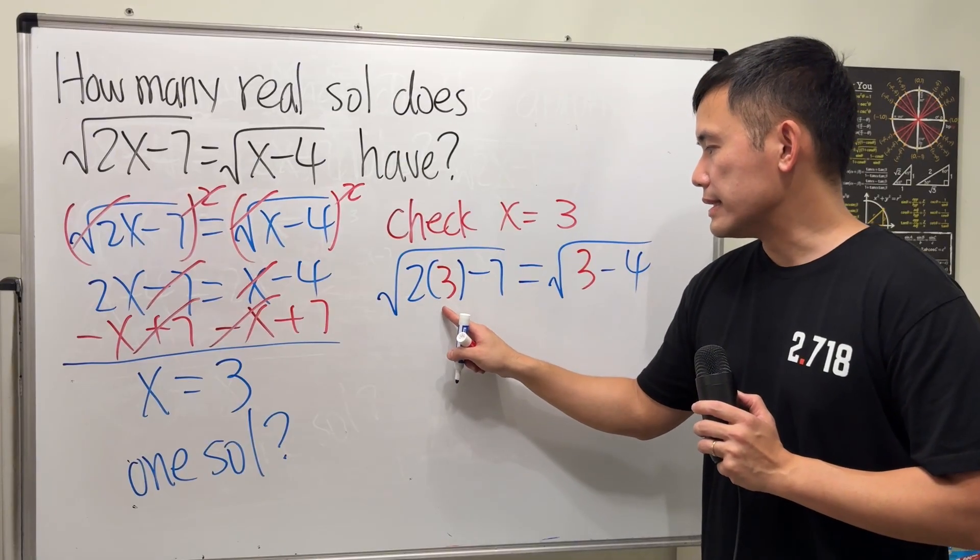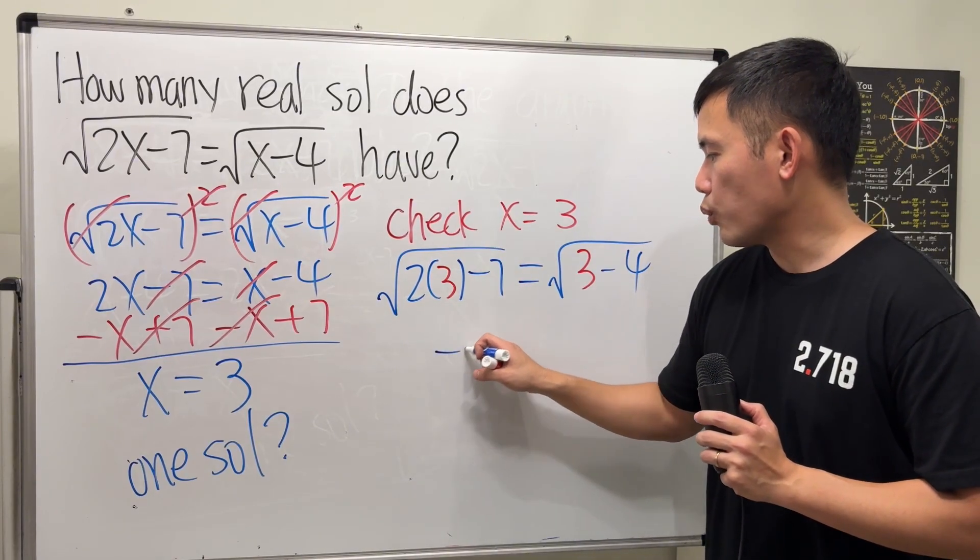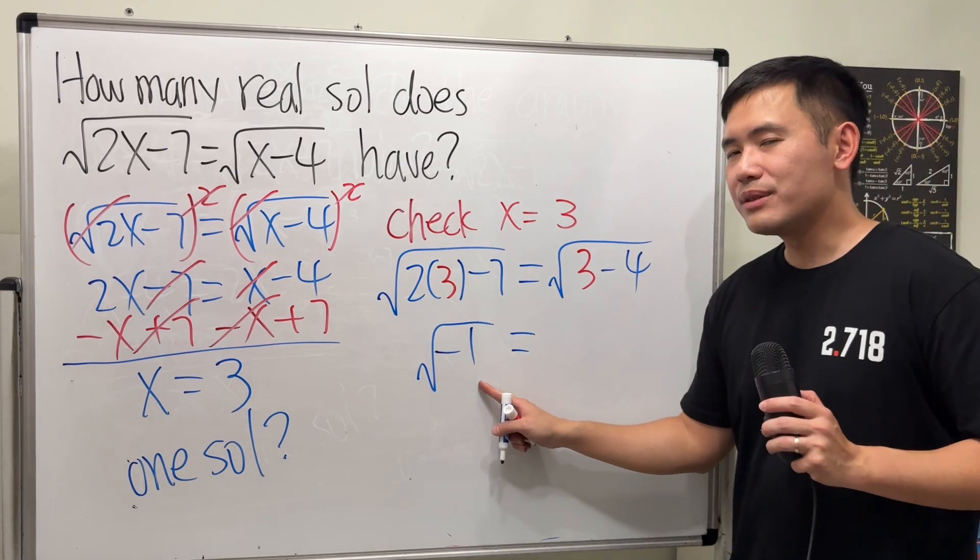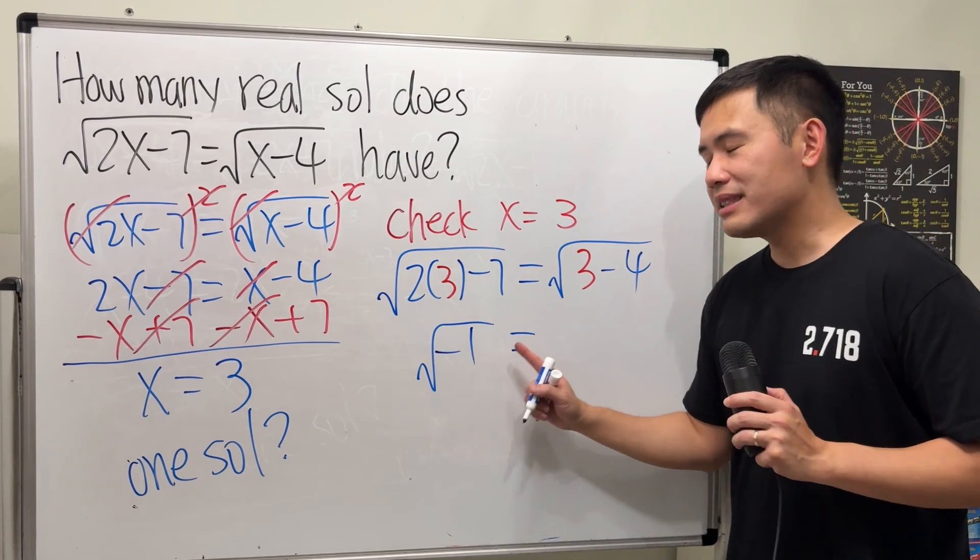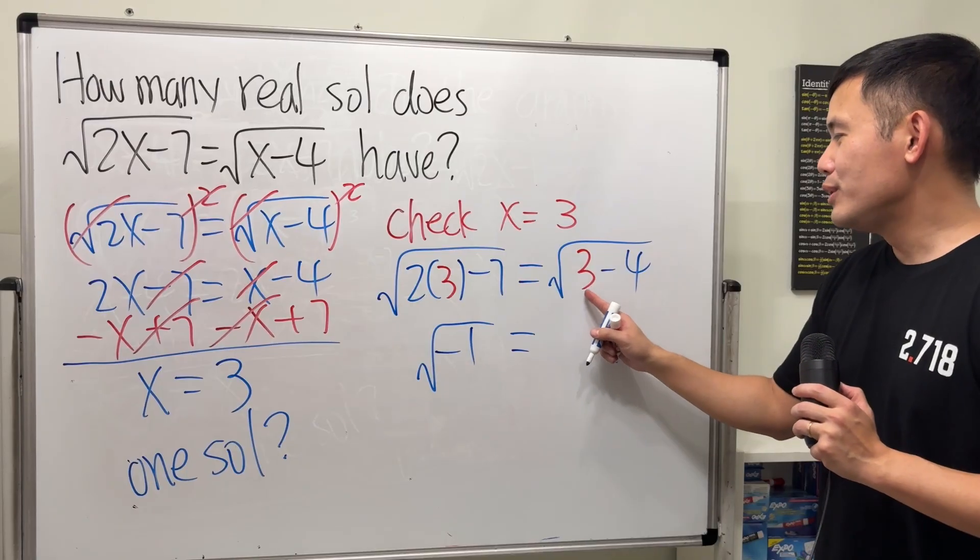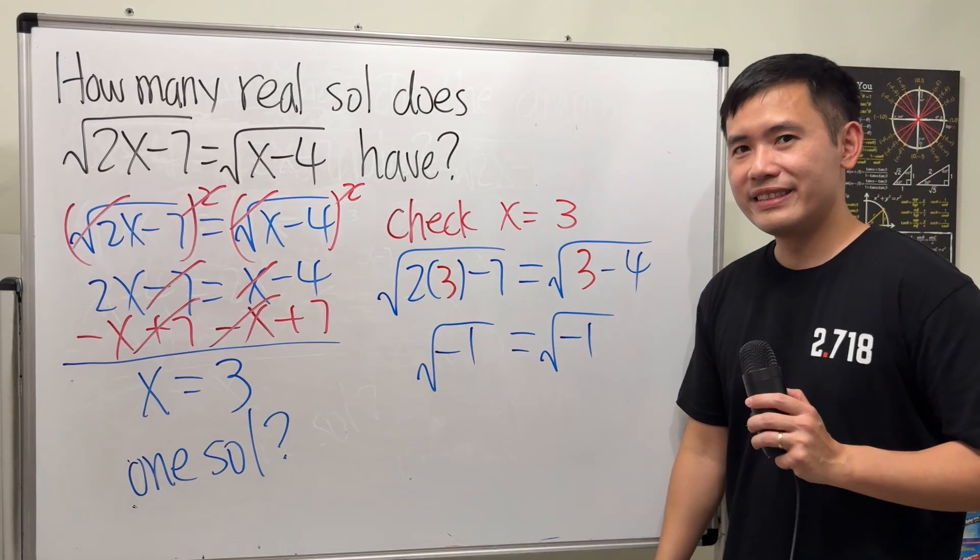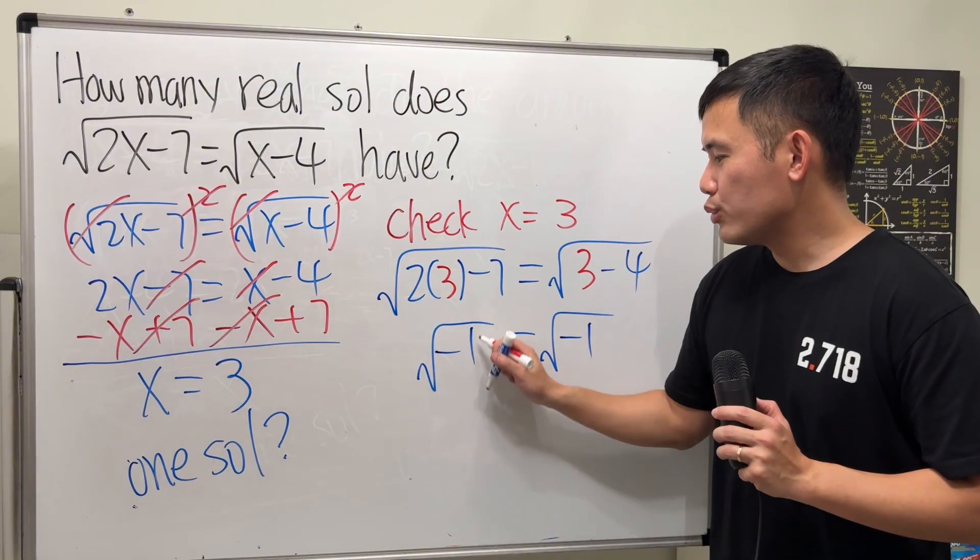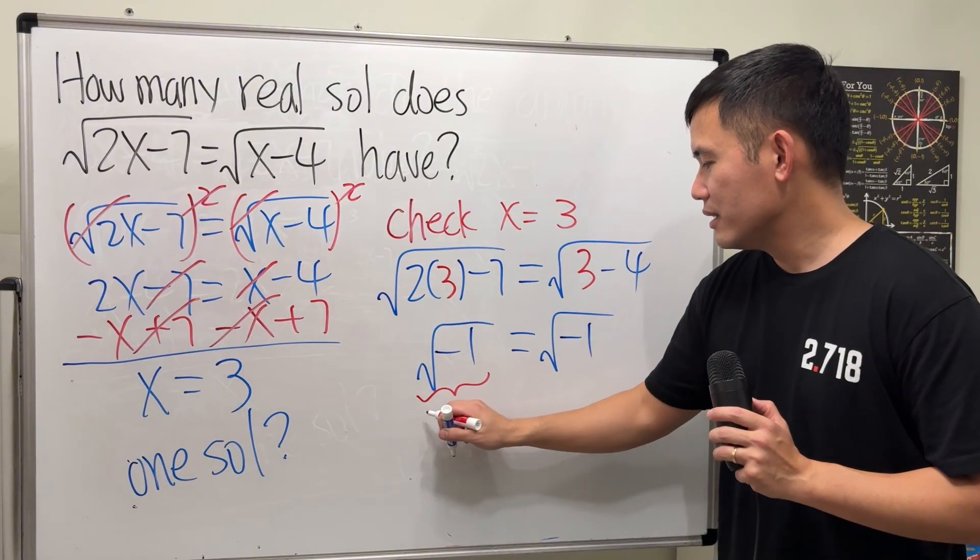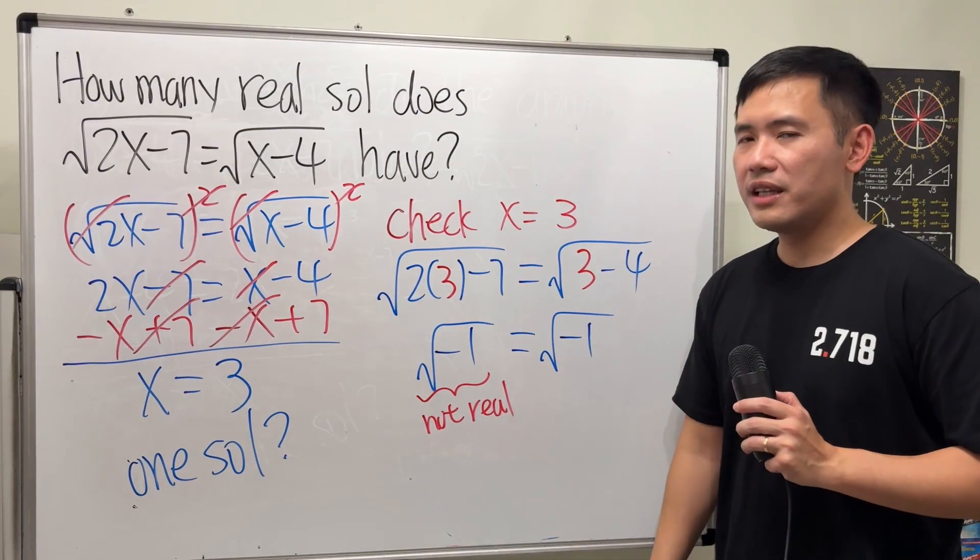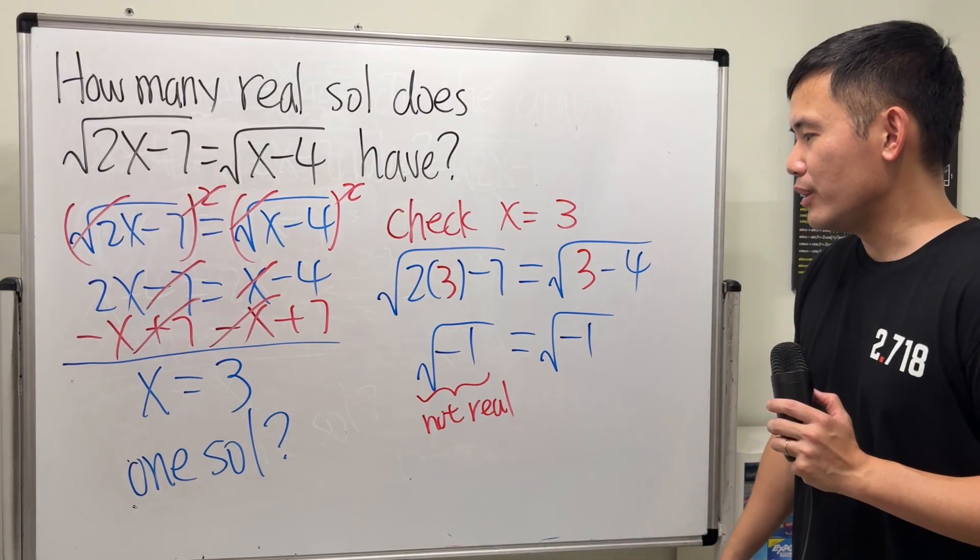Here, 2 times 3 is 6 minus 7, we have negative 1 inside of the square root. Uh-oh, I don't think that's good anymore, right? But if you look at this right here, 3 minus 4 is also negative 1 inside of the square root. But as we all know, square root of negative 1, this right here is not real. We are going to get the i. Likewise, this right here is also not real.